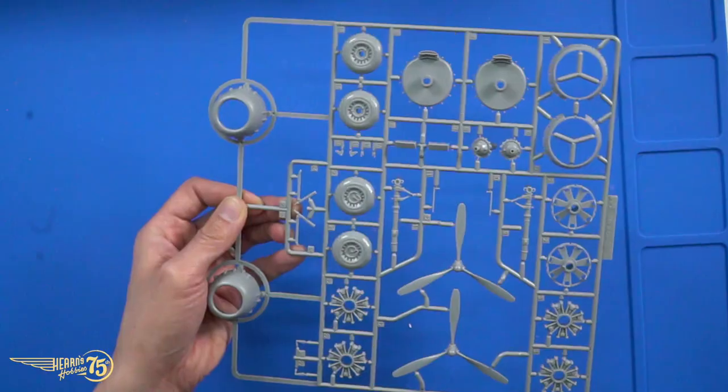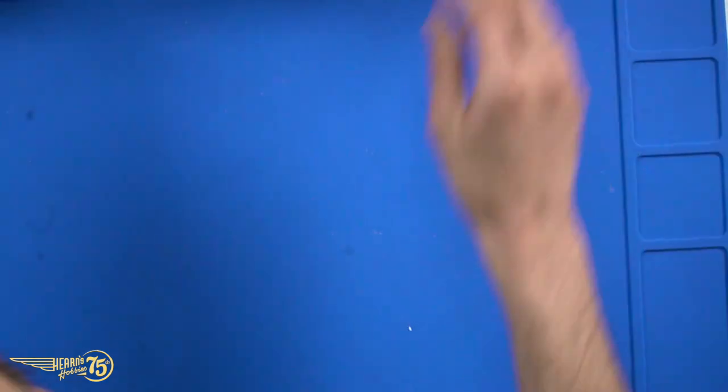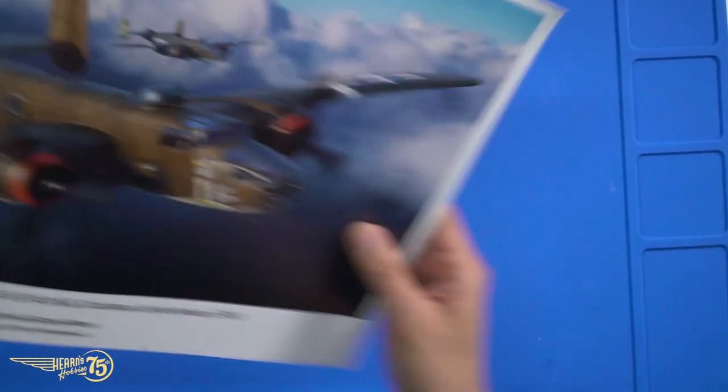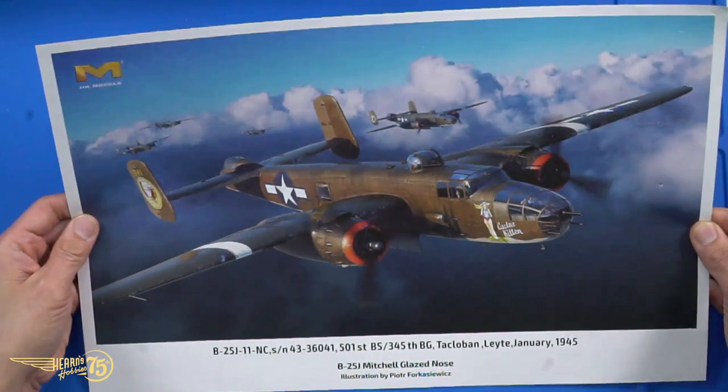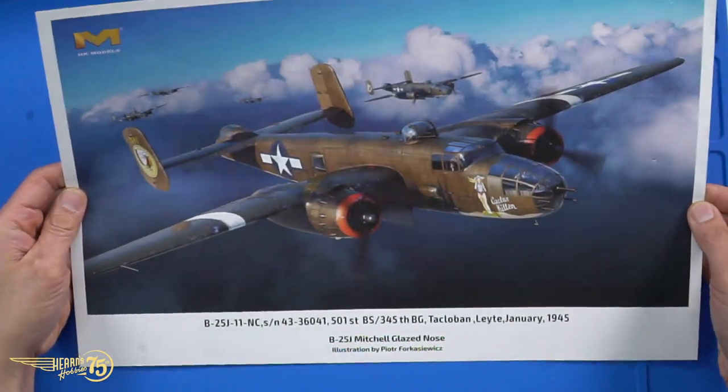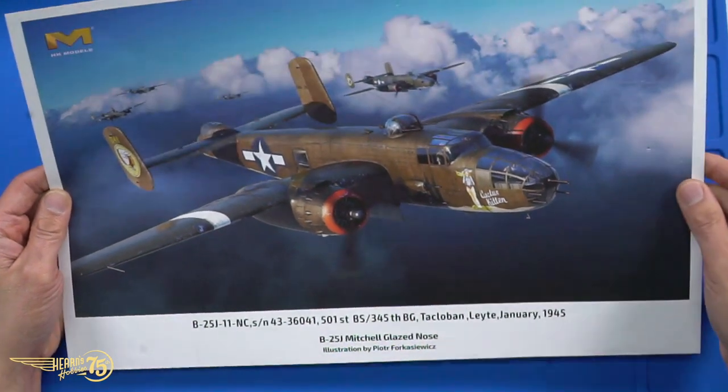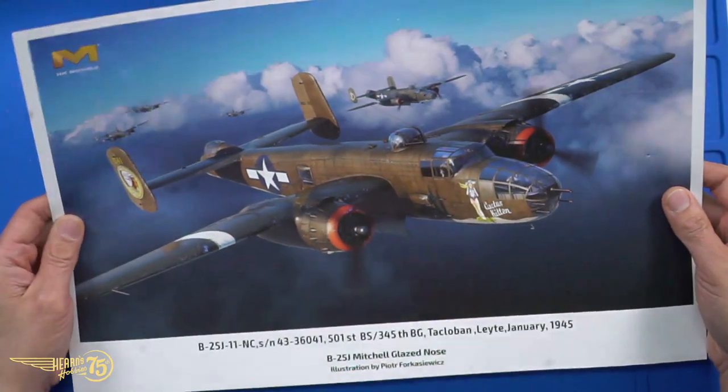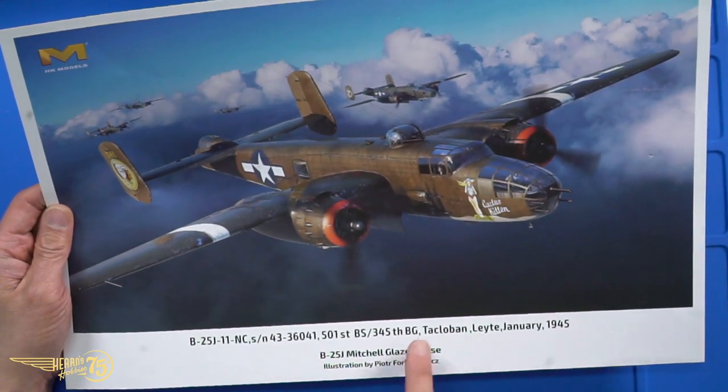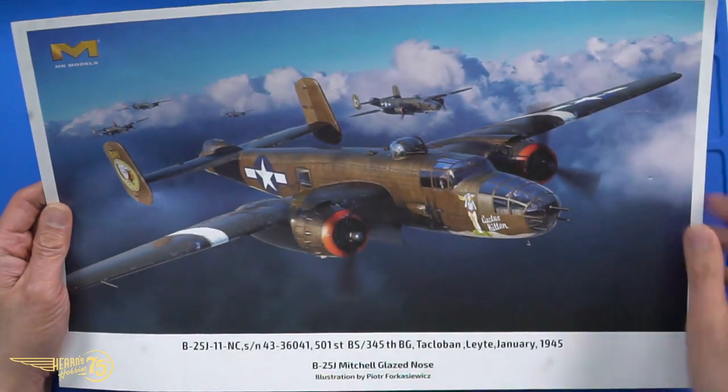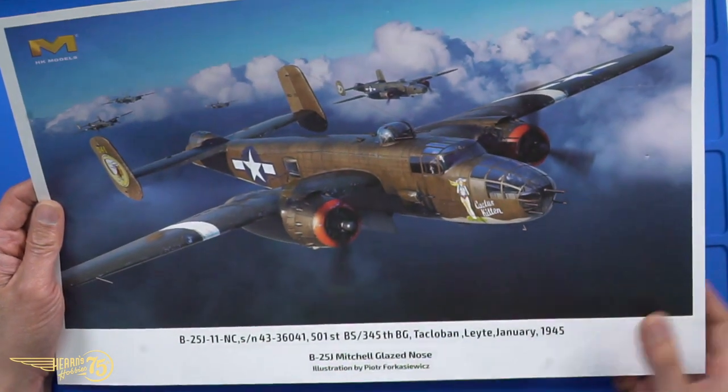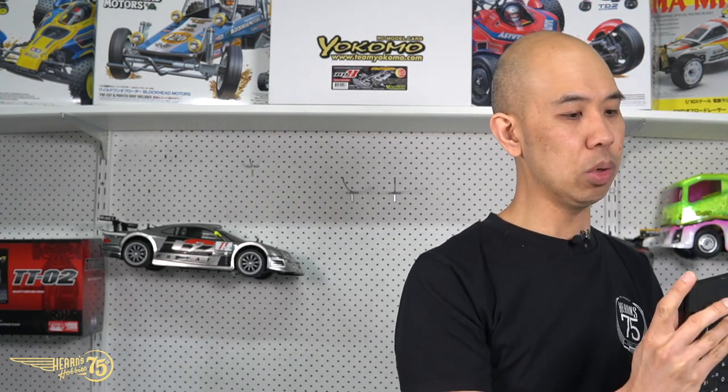Okay so there are all your bits there. I think that's all the plastic. So if that's all the plastic, we're left with a really beautiful print. Beautiful work by Piotr Forkasiewicz. I'm not very good at pronouncing names. That looks Polish to me. But that's a beautiful glazed nose B-25 portrayed at late January 1945. Beautiful.